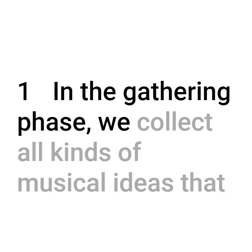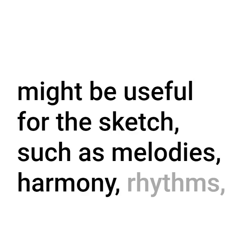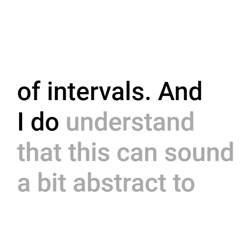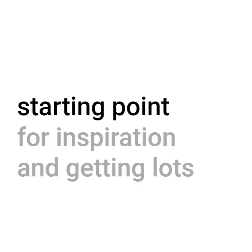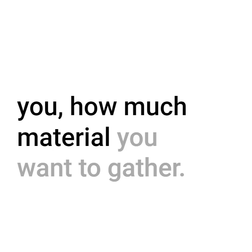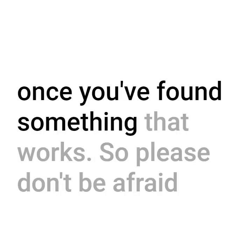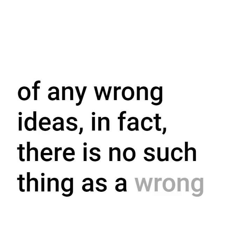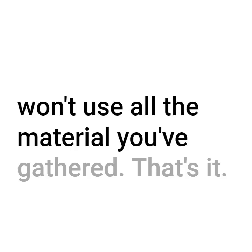One. In the gathering phase, we collect all kinds of musical ideas that might be useful for the sketch, such as melodies, harmony, rhythms, maybe just a vertical structure or a motif, maybe even just a bunch of intervals. The intervals are a fantastic starting point for inspiration and getting lots of ideas down quickly. It's completely up to you how much material you want to gather. We will start a feedback loop that will lead to even more ideas once you've found something that works. Please don't be afraid of any wrong ideas — in fact, there is no such thing as a wrong idea. The worst thing that could happen is that you won't use all the material you've gathered.